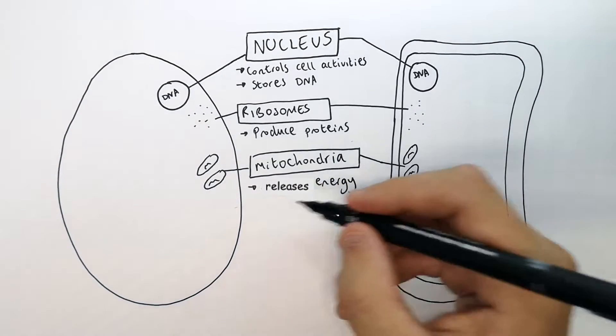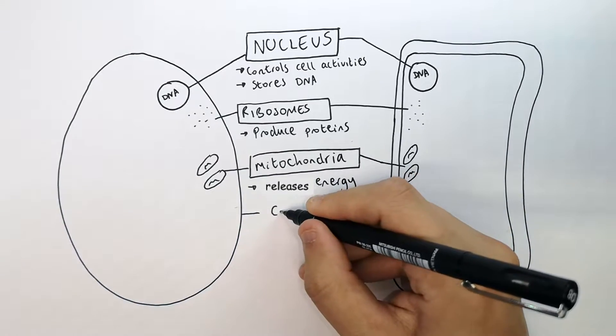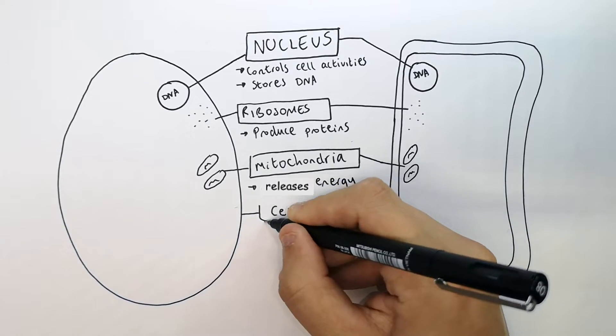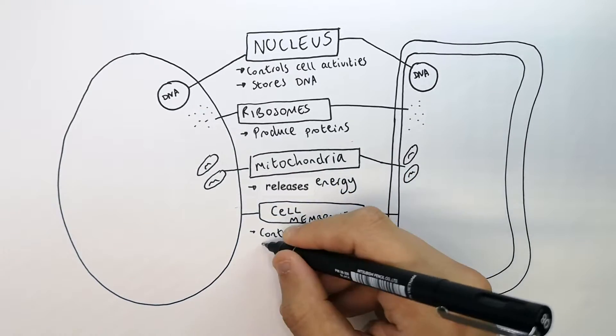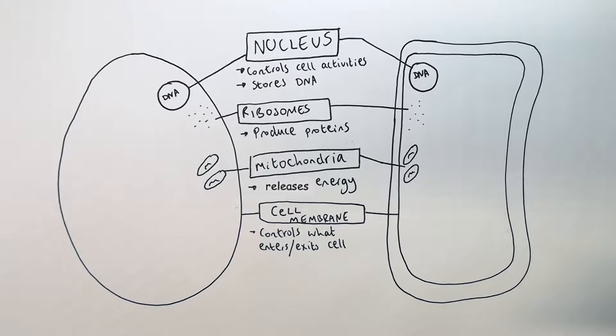Next is the cell membrane. Don't confuse this with the cell wall. The cell membrane is in animal and plant cells. The cell membrane controls what enters and exits the cell.